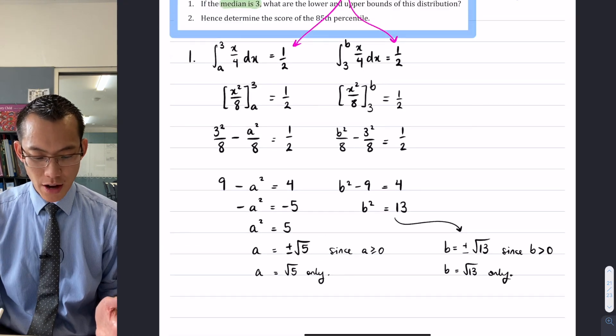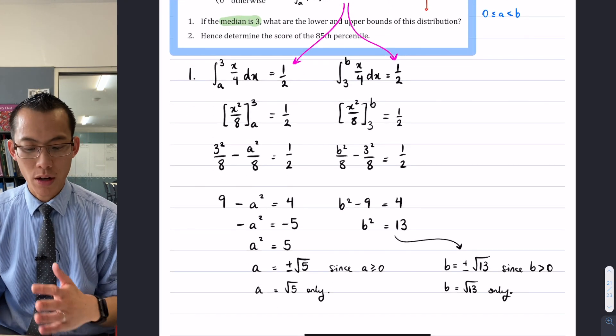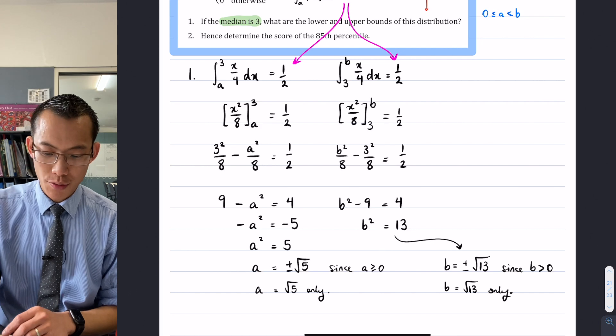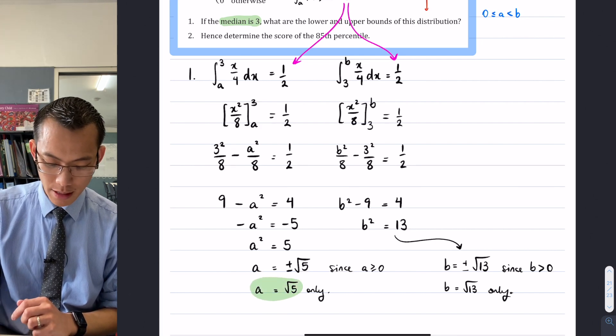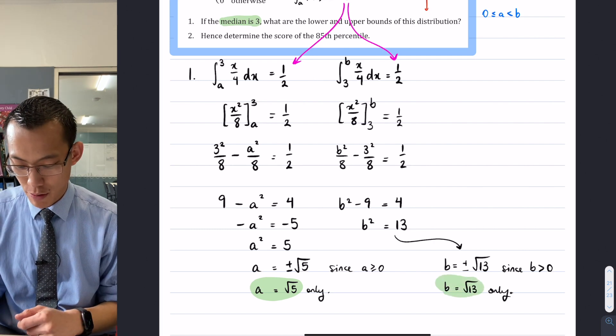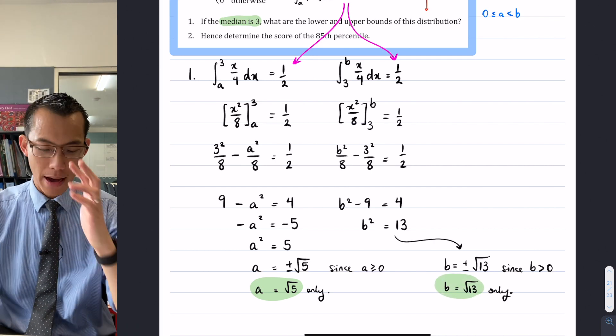So just double check. Have I answered the question? If the median is three, what are the lower and upper bounds of this distribution? And the answer is, yeah, I found them. They are right here. a should be root five—that's the lower boundary. And b should be root 13, that's the upper boundary.